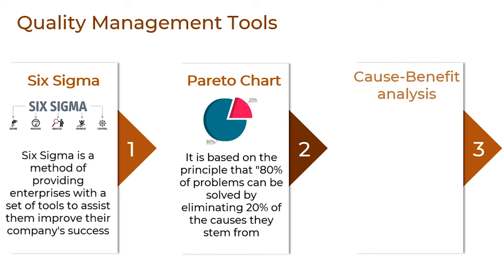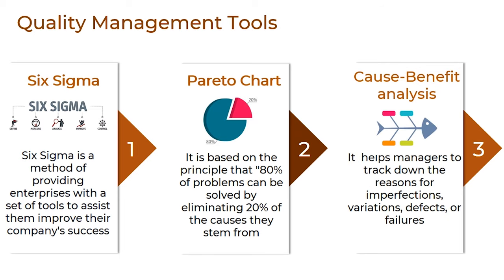Then, cause-and-effect analysis. The fishbone diagram is a cause-and-effect diagram that usually helps managers to track down the reasons for imperfections, variations, defects, or failures. Thus, it is also called the Ishikawa diagram. The diagram looks just like a fish's skeleton, hence the name. Here, we write the problem at its head and its causes feeding into the spine. Once all the causes have been identified, managers can start looking for solutions to ensure that the problem is not recurring.